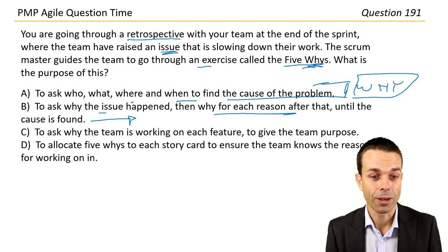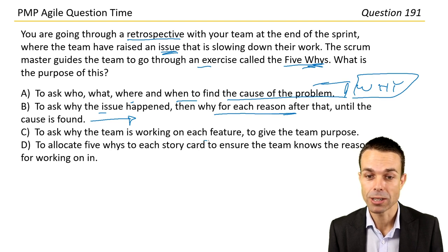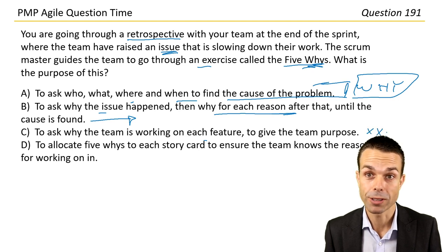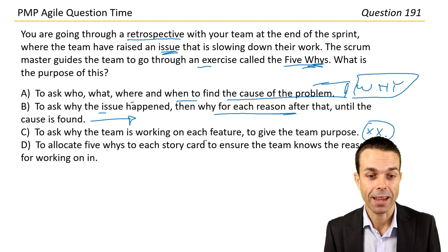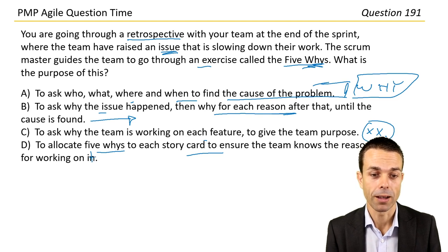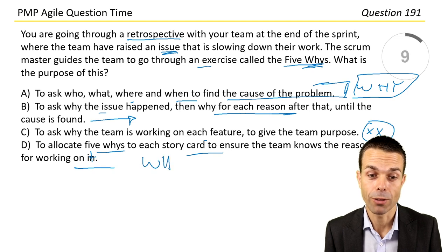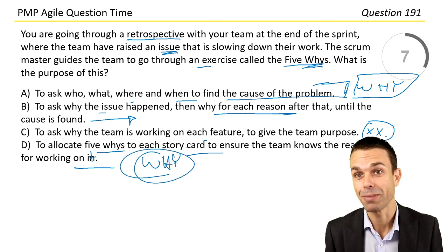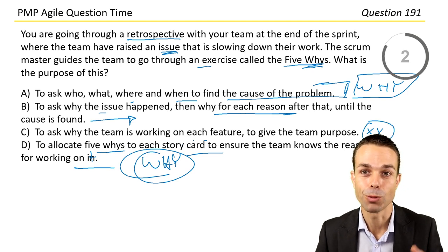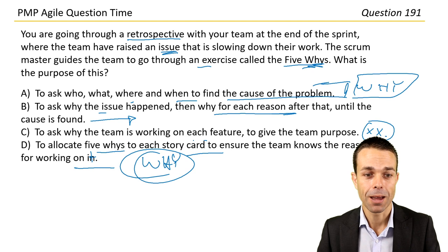The other options — asking why the team is working on each feature to give the team purpose — no, it's more of a root cause thing. And allocating Five Whys to each story card to ensure the team knows the reason for working on it — not that one either. Although a story card should have the why at the beginning; that's good practice. We use the Five Whys to problem-solve.